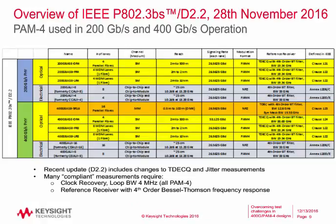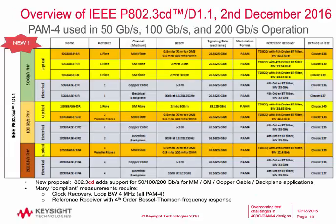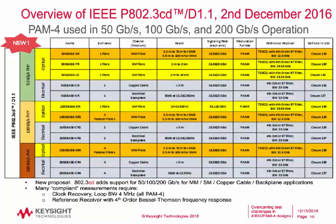The next two slides won't be covered in detail, but they provide tabulated information including what the reference receiver bandwidth should be for each particular standard, since there are a lot of acronyms and clauses being used. This has been tabulated for both 802.3BS and 802.3CD.